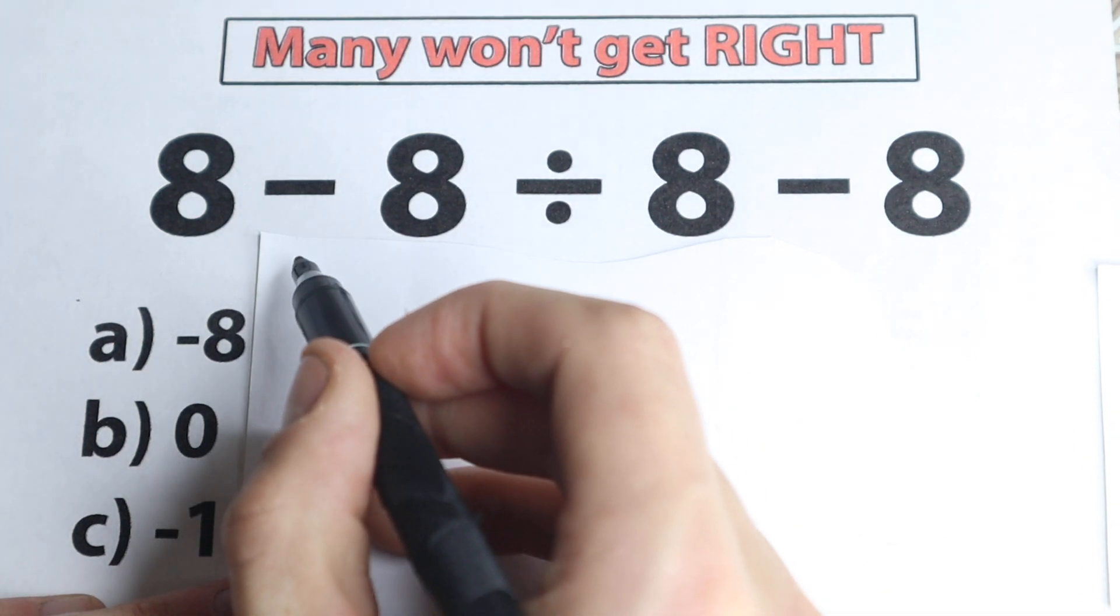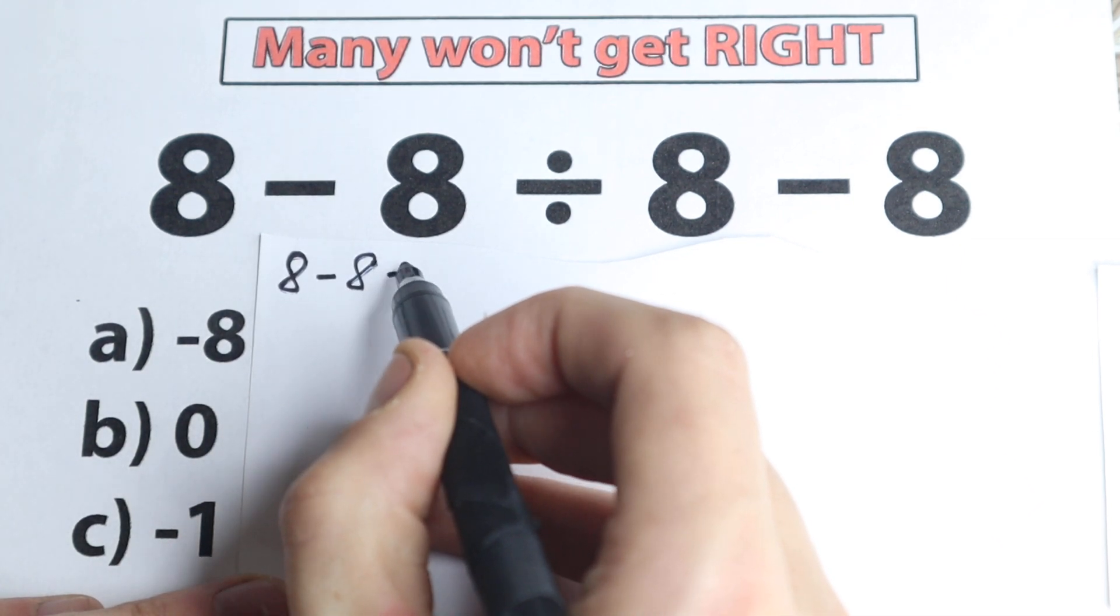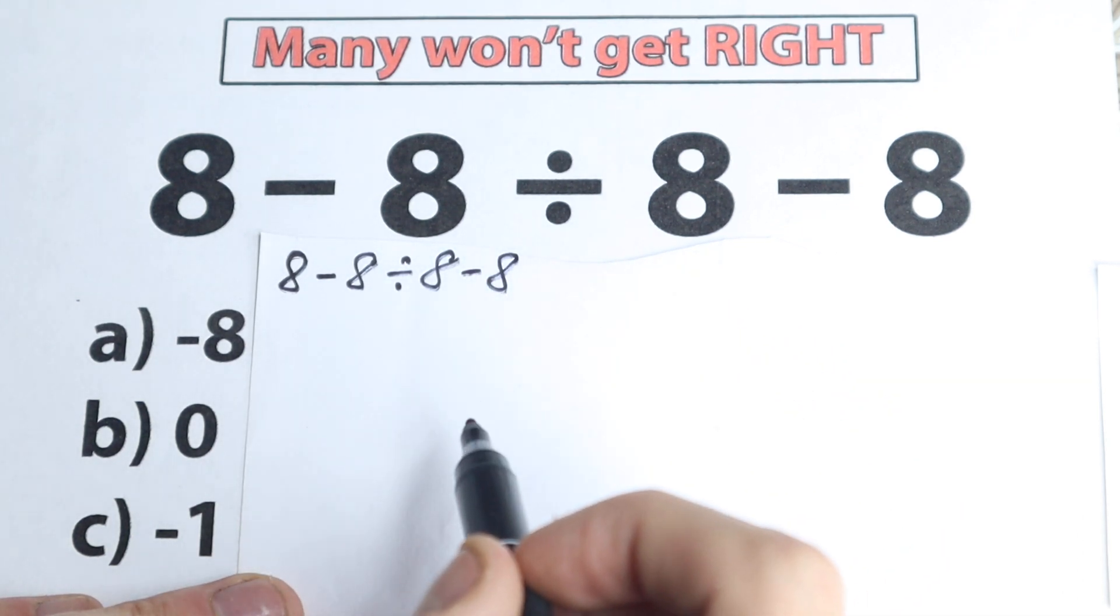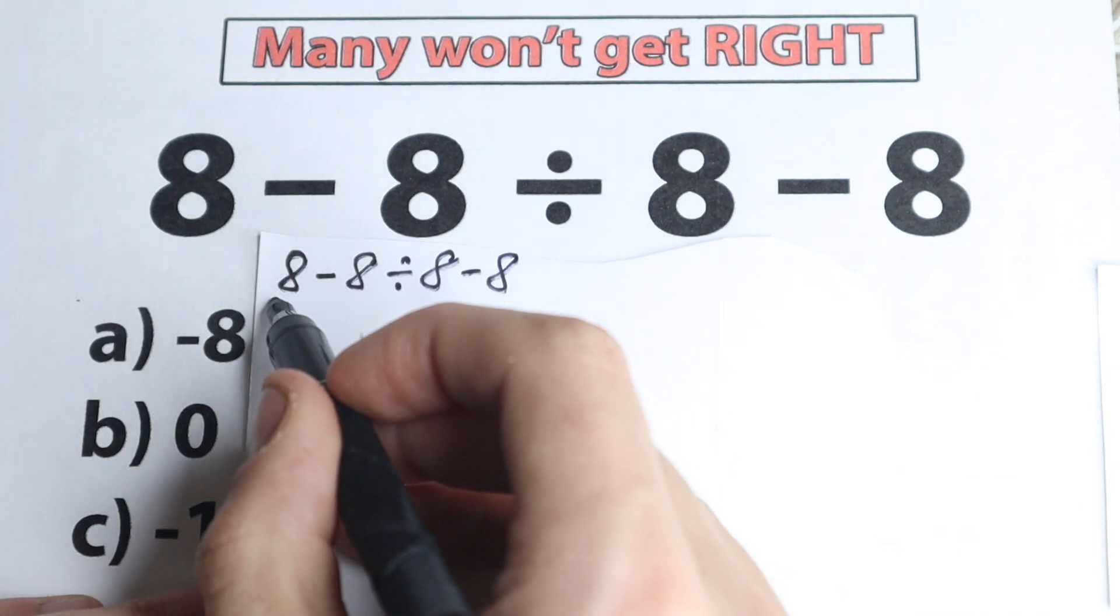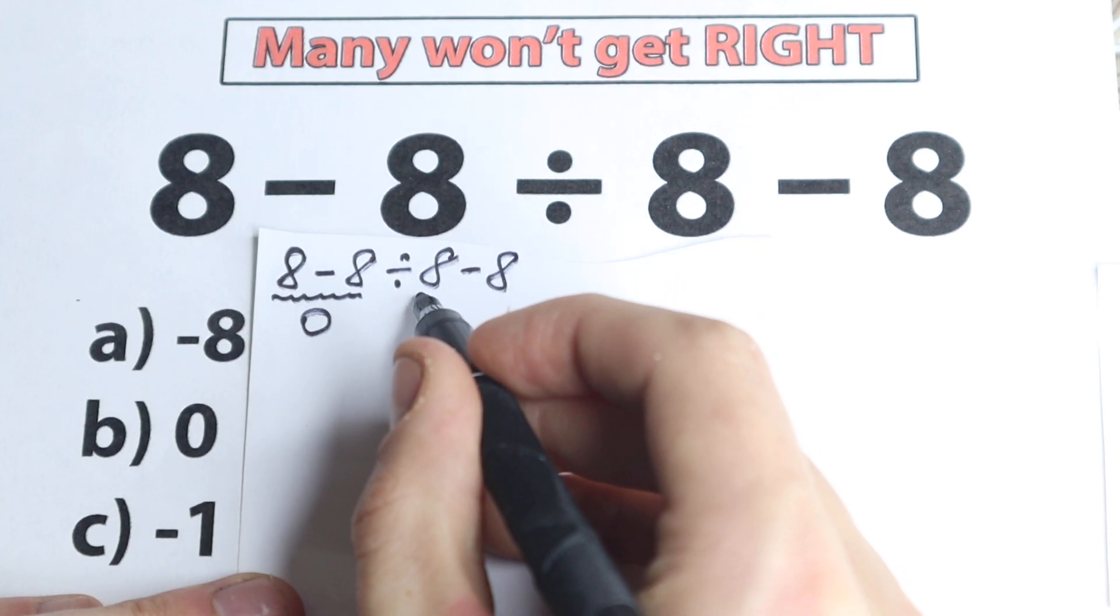So right now I want to start with this solution. So right here we have 8 minus 8 divided by 8 and minus 8. So here's our question, and one part of students solve this question like that. They say OK, 8 minus 8 on the left hand side, it looks like equal to 0, and we have on the right hand side the same subtraction, so we have 8 minus 8,